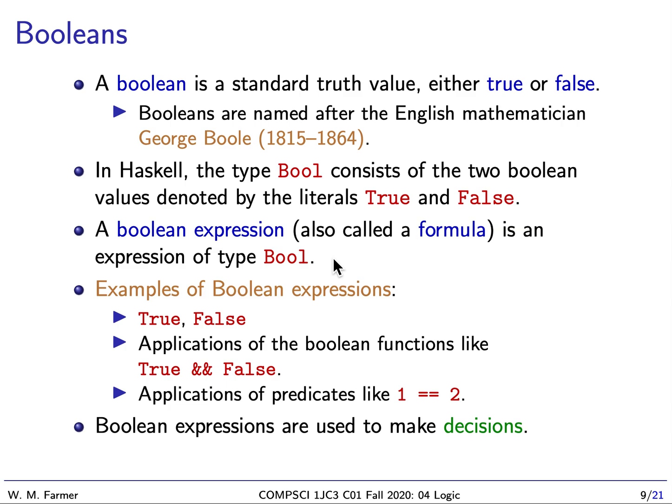This is Bill Farmer again. Welcome back to McMaster University Computer Science 1JC3, Introduction to Computational Thinking. We are going to continue with the topic of logic. We're going to start today by talking about Booleans. A Boolean is just a standard truth value, and there are two standard truth values: true and false. Booleans are named after the English mathematician George Boole.